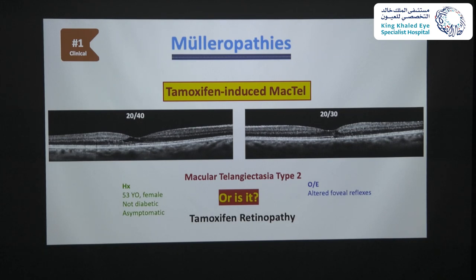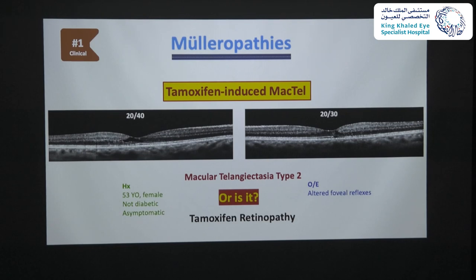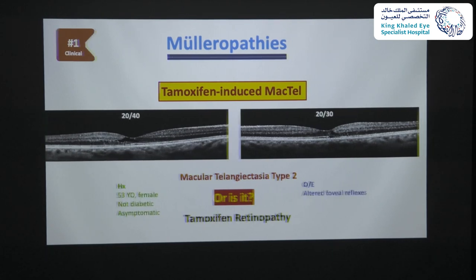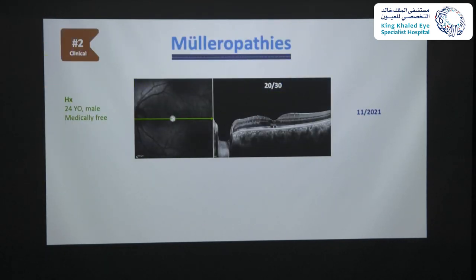We contacted the oncologist about tamoxifen, and he said he was already planning to discontinue it — they usually give a course of five years — hoping that her vision does not worsen. This was the end of the first muelleropathy case.